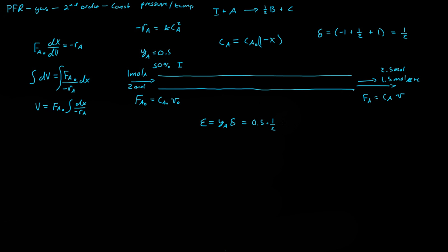With yA = 0.5 and delta = 1, the expansion factor epsilon equals 0.5 × 1 = 0.5. The volumetric flow rate equals the initial volumetric flow rate times (1 + ε·X). At 0% conversion, the flow rates are equal; at 100% conversion, the exit volumetric flow rate is 1.25 times the initial — 25% more than the inlet.